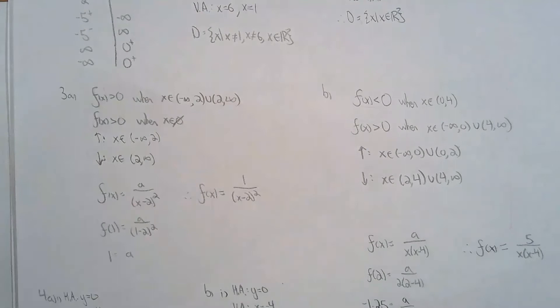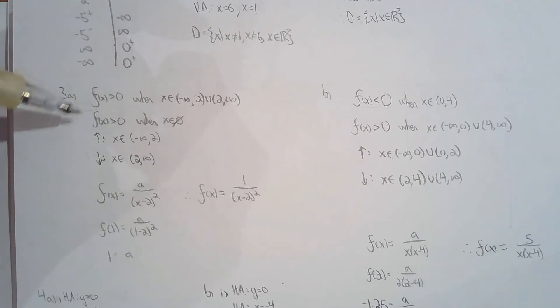For question three, I had to tell you when is it greater than zero, when is it less than zero, when is it increasing, when is it decreasing. Luckily, they gave me the graph, so that was pretty easy. They gave me the graph, and they also asked me for the equation, so I generated the factors of the denominator given the vertical asymptote.